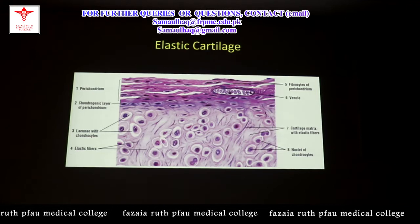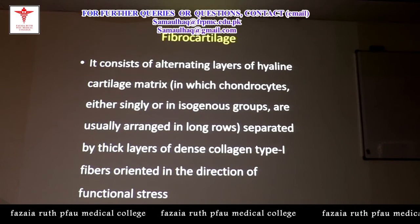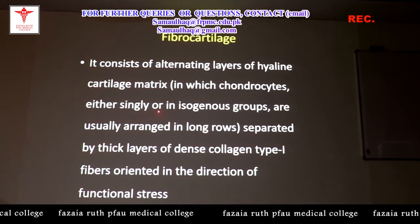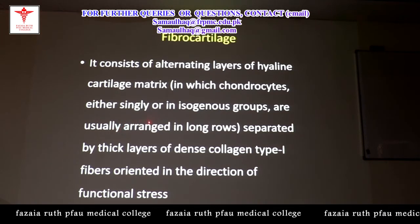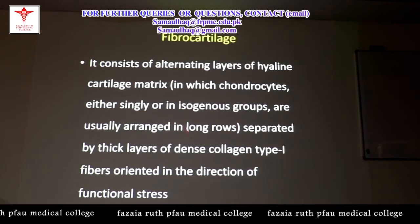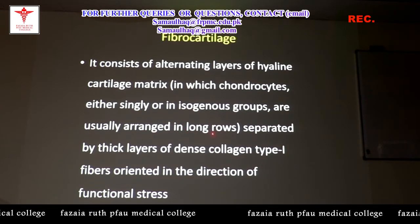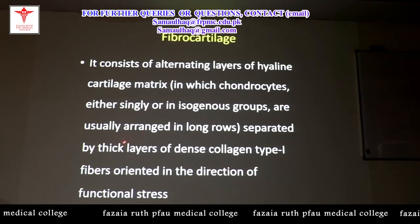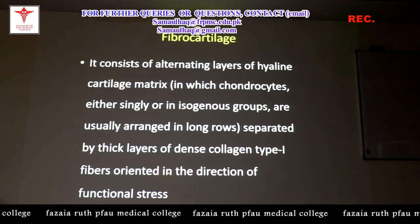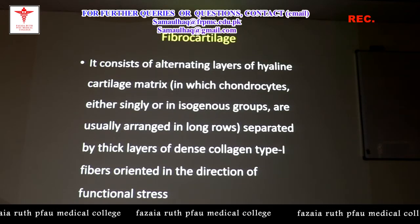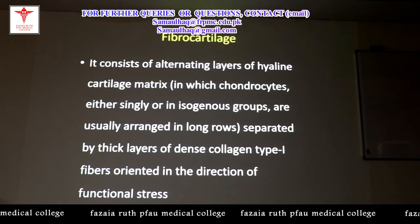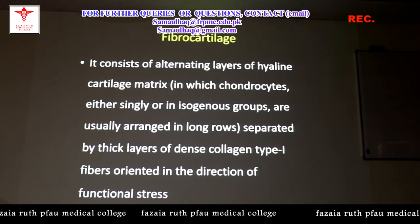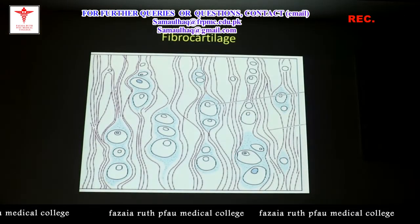The third and last type of cartilage is fibrocartilage. It consists of alternating layers of hyaline cartilage matrix in which chondrocytes — either singly or in isogenous groups — are present. The key differentiating point is that they are arranged in long rows, unlike hyaline or elastic where they are scattered in isogenous groups. They are separated by thick layers of dense collagen type 1 fibers oriented in the direction of functional stress. The best examples are intervertebral discs and the menisci of the knee.